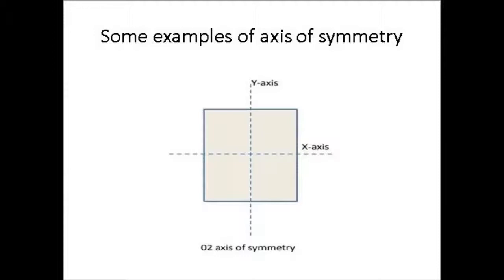Some examples of axis of symmetry. The following is an example of a square. Square has two axes of symmetry: the y-axis and x-axis. When both are passing through its centroid, these lines act as axes of symmetry for the square.